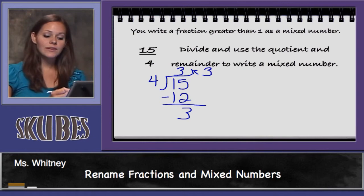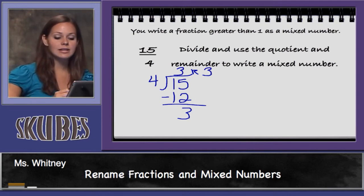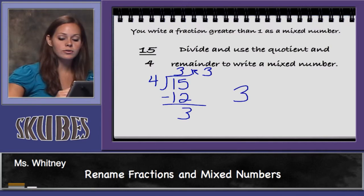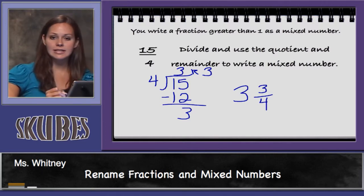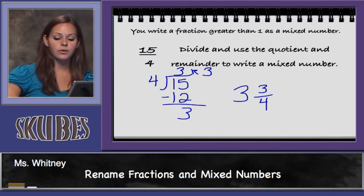To write fifteen-fourths as a mixed number, we write three wholes. The remainder becomes our numerator and our denominator is the same. So, fifteen-fourths equals three and three-fourths.